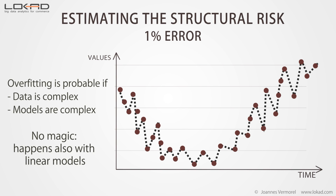We have seen previously that an obvious way of ending up with overfitting problems was to increase the model complexity. But there is also another way — a more subtle way — of ending up with overfitting problems: this can happen by increasing the complexity of the data. You are likely to end up with overfitting problems even if the models themselves stay unchanged. In our experience at LOCAD, this situation is frequently encountered by organizations that refine, year after year, their own forecasting models with ever-increasing data inputs, without explicitly taking care of the structural risk that lurks within their models. In high dimensions, even linear models are subject to overfitting problems.